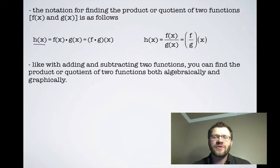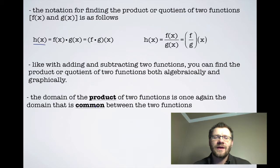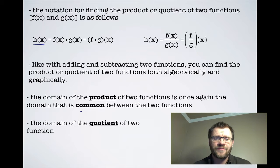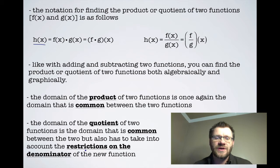Like with adding and subtracting two functions, you can find the product or quotient both algebraically and graphically. The domain of the product of two functions is the domain common to both functions. The domain of the quotient is also the common domain, but must additionally account for restrictions on the denominator of the new function.